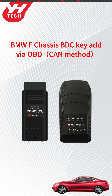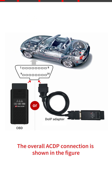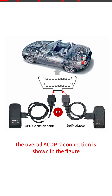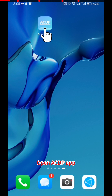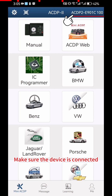This video shows how to add a BMW F Chassis BDC key via CAN OBD method. The overall ACDP connection is shown in the figure, as well as the overall ACDP 2 connection. Open the ACDP app and make sure the device is connected.